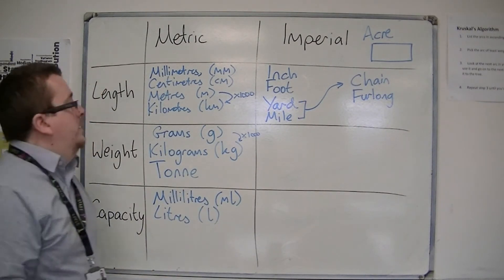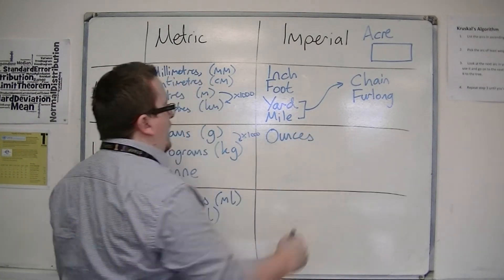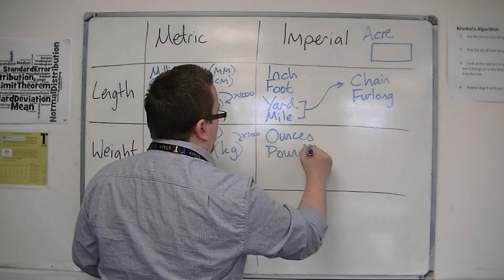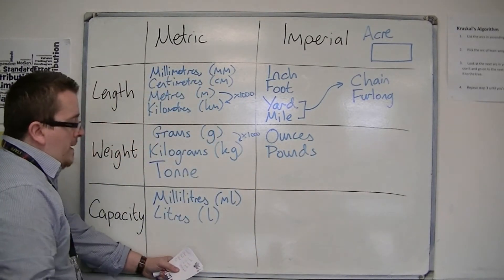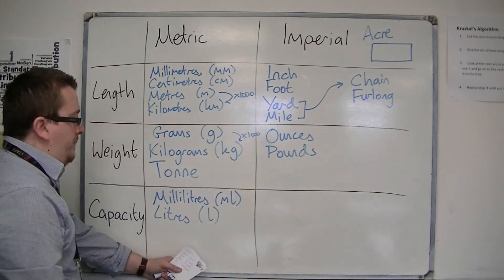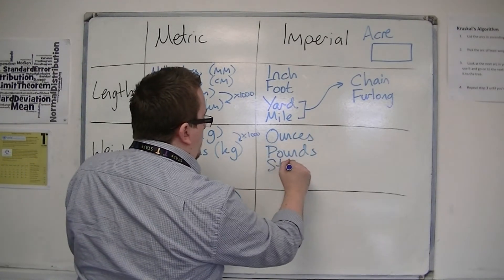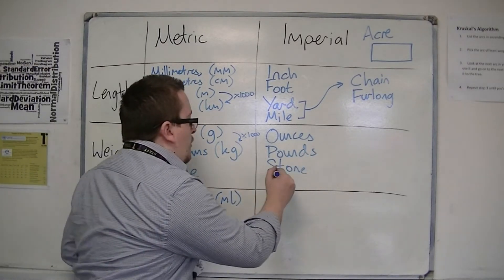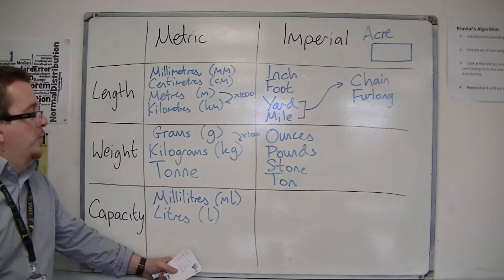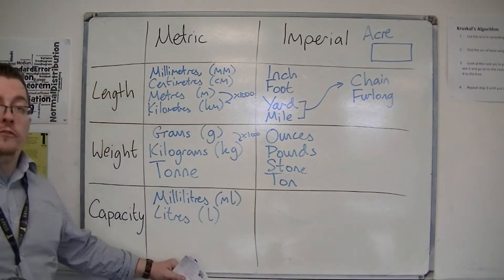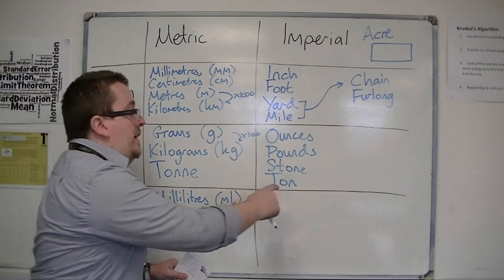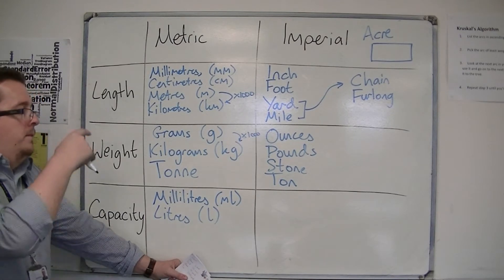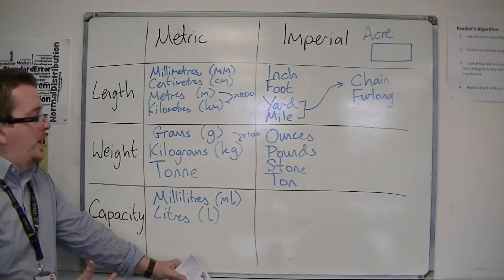Now for weight, you've got ounces. People will be used to using ounces. And you've got pounds. So there are 16 ounces in a pound. And then you've got stone. And there are 14 pounds in a stone. And then you've got that imperial ton that I told you about, which is 2,240 pounds in a ton. So these also have some strange conversions between them.